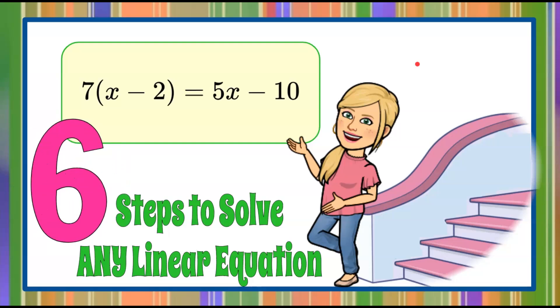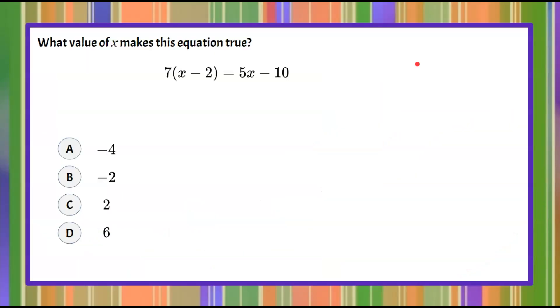It's the magic of math here and today we're going to learn six steps to solve any linear equation. Here's our math question today. We're asked what value of x makes this equation true and we have 7 multiplied by the quantity x subtract 2 is equal to 5x subtract 10 and we have four answer choices to pick from.